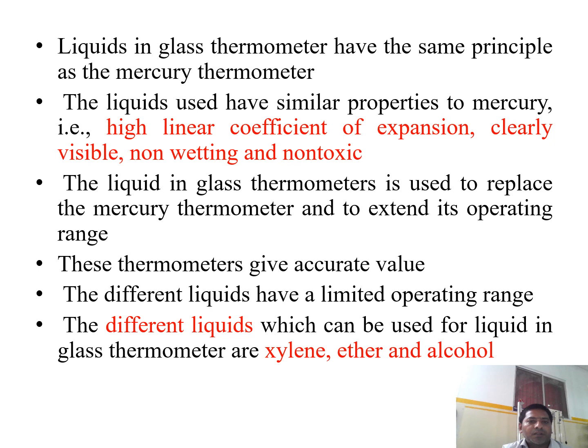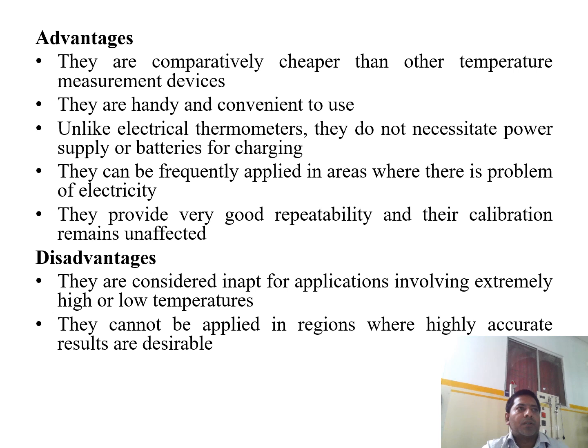The liquid-in-glass thermometer works on the same principle as the mercury thermometer. The liquid used has similar properties to mercury: a high linear coefficient of expansion, clearly visible, non-bedding, and non-toxic. The liquid-in-glass thermometer is used to replace the mercury thermometer and to extend its operating range. Different liquids have a limited operating range, and liquids such as liquid gas, xylene, ether, and alcohol can be used.